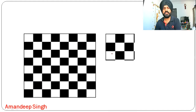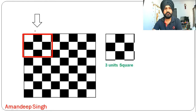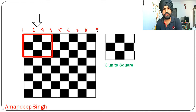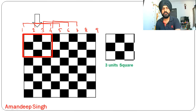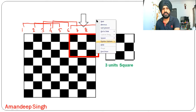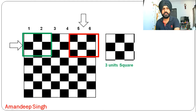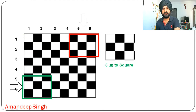Now for three unit squares. Again label the vertical lines one through nine. From one to four you get the first square, from two to five the second, from three to six the third, and so on — the last square goes from six to nine. So there are six squares from left to right and six from top to bottom, giving six times six, which is 36 such squares.